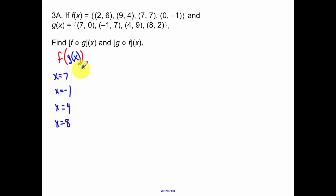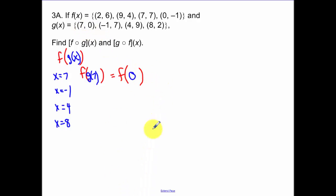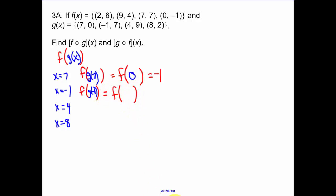So what is g of x? I'll evaluate using the table. Finding f of g of 0: g of 0 gives an output, and f of 0 — when x equals 0 in f of x — gives y equal to negative 1. For f of g of negative 1: g of negative 1 gives y equals 7, so we look for f of 7, and f of 7 equals 7.